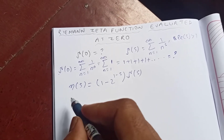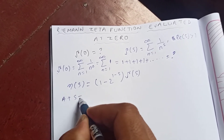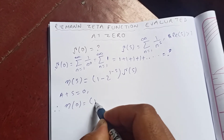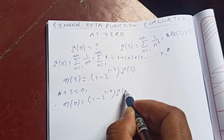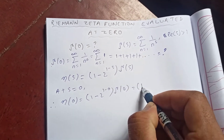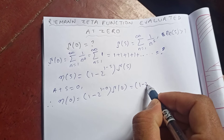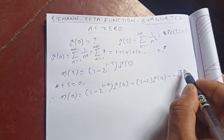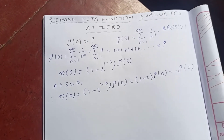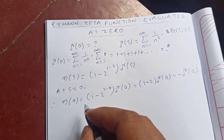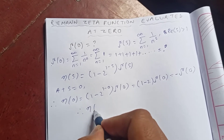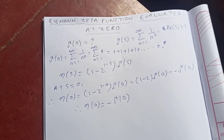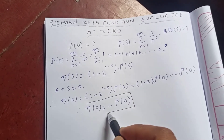At s equal to zero, eta of zero equals one minus two to the one minus zero, times zeta of zero. One minus zero is just one, so two to the one is two. Therefore eta of zero equals one minus two times zeta of zero, which gives us negative zeta of zero.